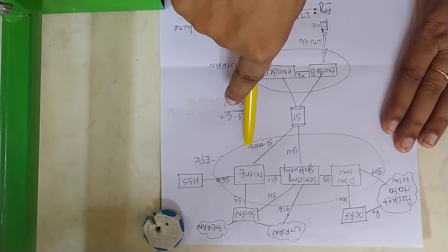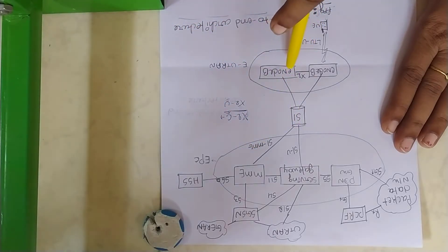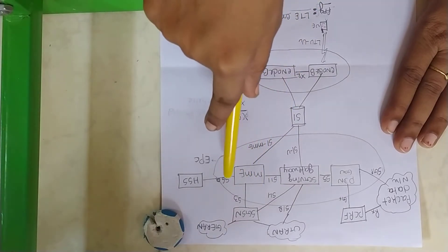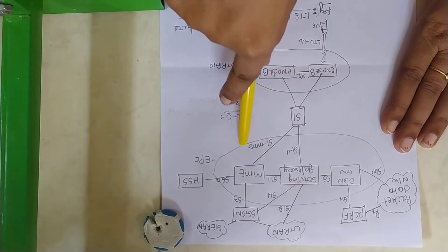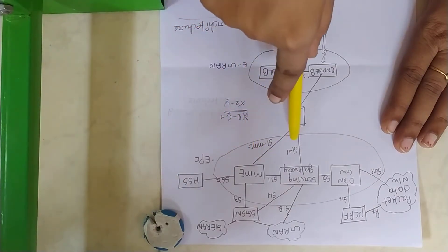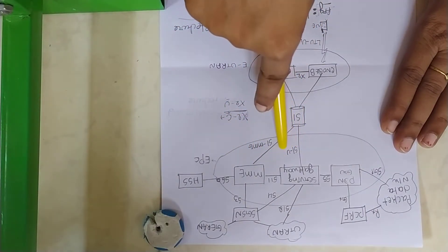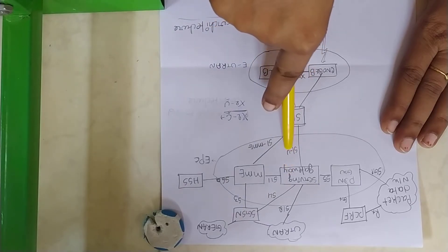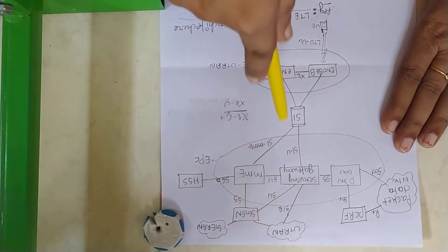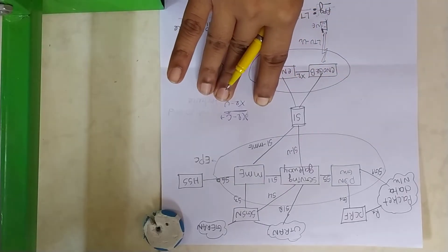S1-MME is the signaling interface between E node B and MME. Between E node B and MME, there will be S1-MME, the control plane interface. S1-U carries user traffic between serving gateway and the E node B.